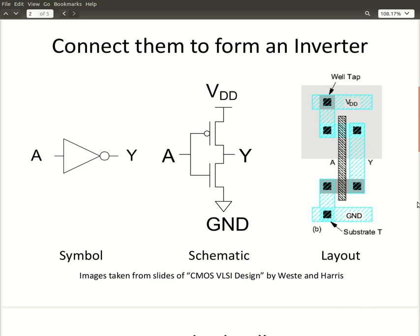Lastly, shown rightmost here is the layout view of the inverter. Again, the PMOS transistor is sitting in its own N-well, shown by the lightly shaded grey area. This is the PMOS device, and below is the NMOS device. The gates of both these transistors, shown here in the black hash region, are shorted to form the input terminal A. The drains of the two devices are shorted using metal one, shown using this light blue hash color, denoted by Y.